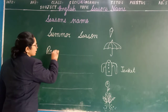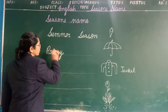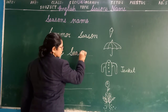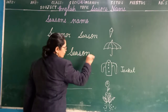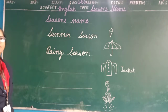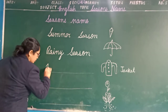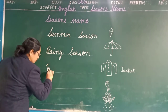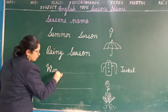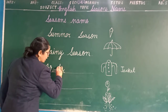Rainy. Jab rain aati hai, rainy season. Jackets we wear in the winter. Winter — W-I-N-T-E-R, winter.